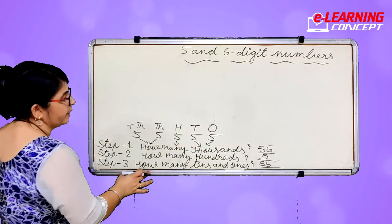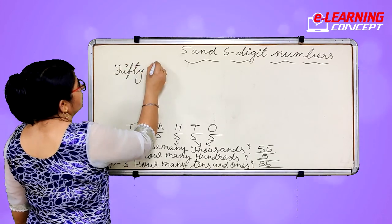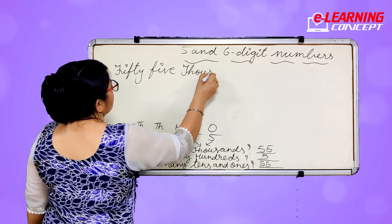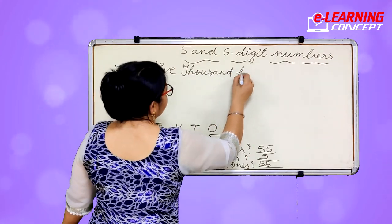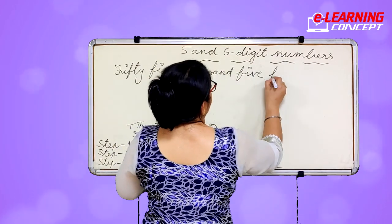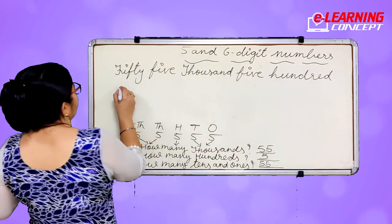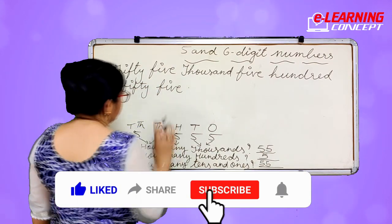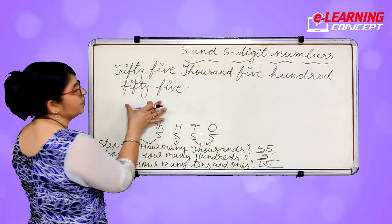So we will read it as 55,000, then 5 hundred, then 55. The number is 55,555.